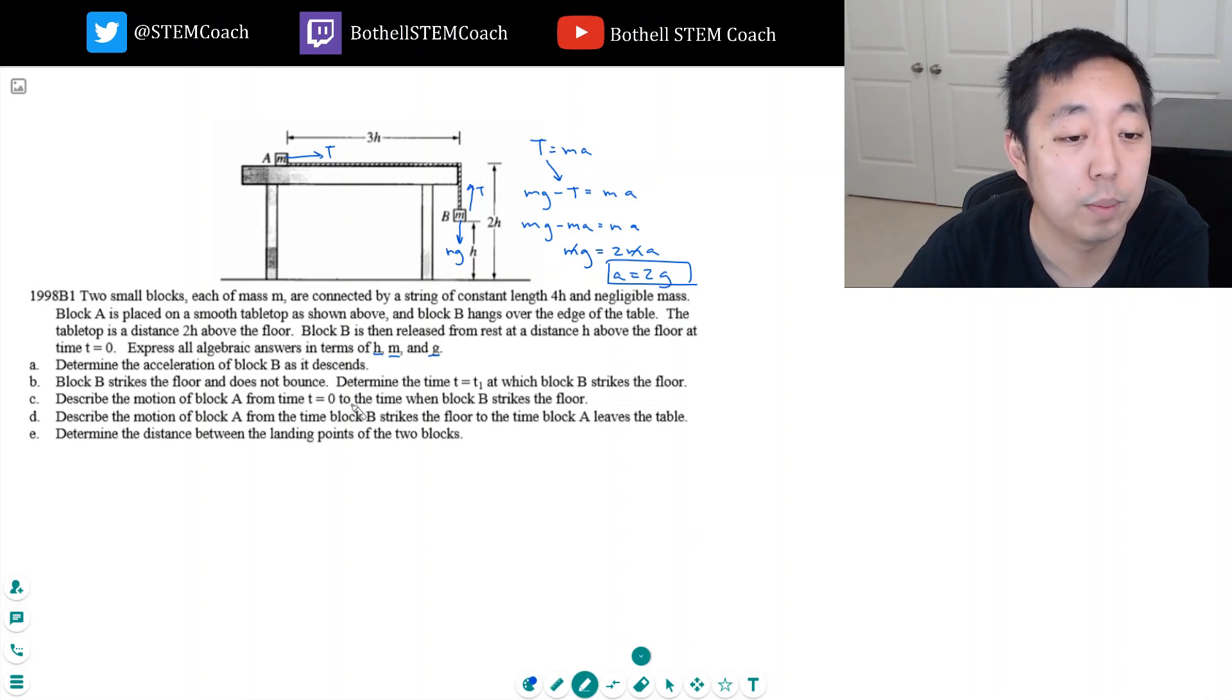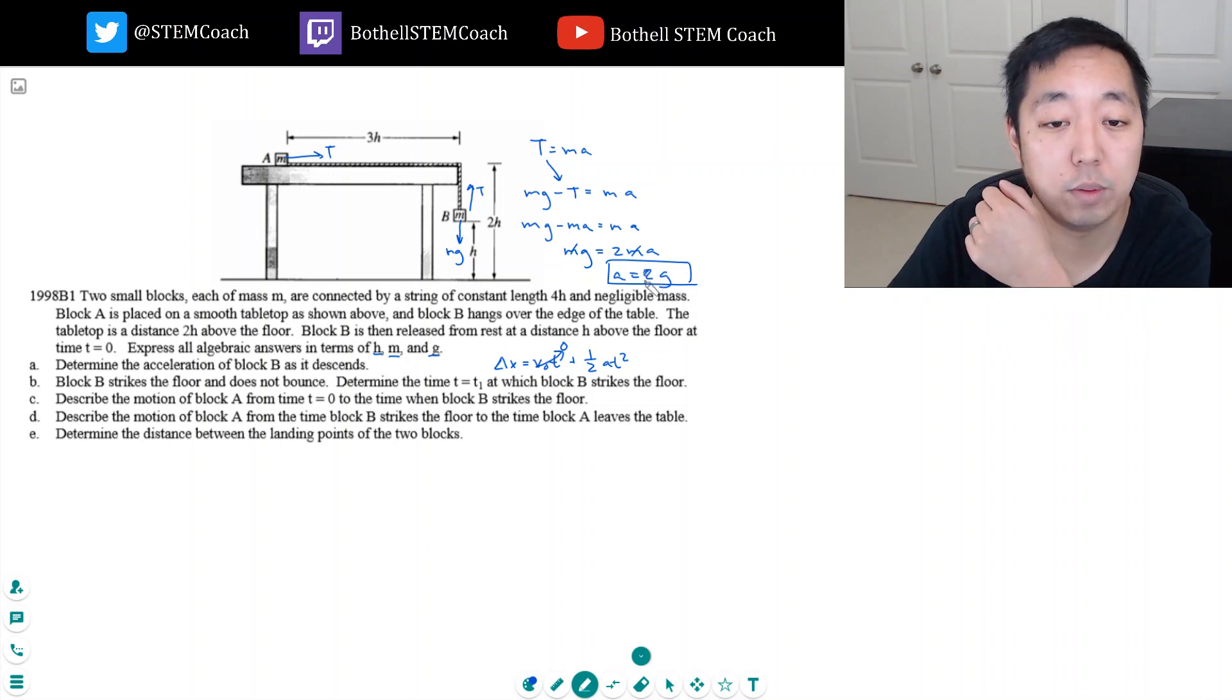Block B strikes the floor and does not bounce. Determine the time T at which block B strikes the floor. Okay, so he strikes the floor and has to fall this distance. I'm probably thinking some kinematic equation: delta x equals V naught T plus one half AT squared. He starts off at rest, so the initial velocity is zero. The acceleration is one half G.